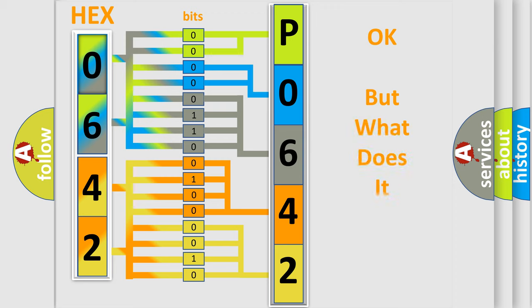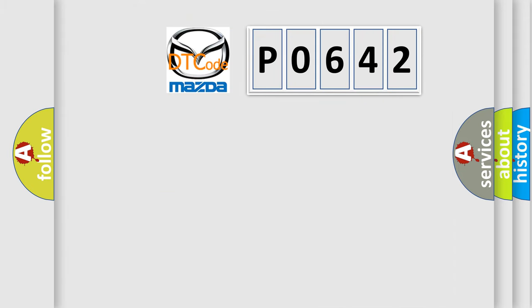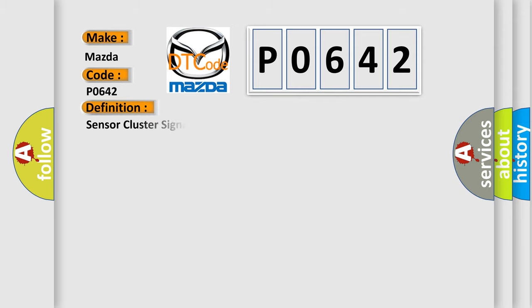The number itself does not make sense to us if we cannot assign information about what it actually expresses. So, what does the diagnostic trouble code P0642 interpret specifically for Mazda car manufacturers? The basic definition is: Sensor cluster signal out of range. Here is a short description of this DTC code.